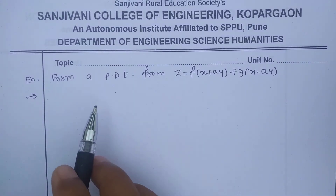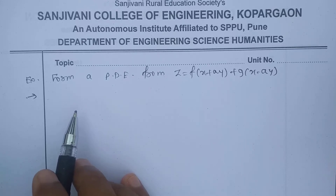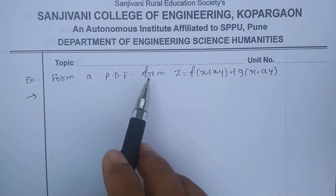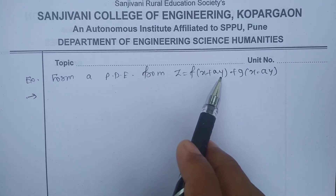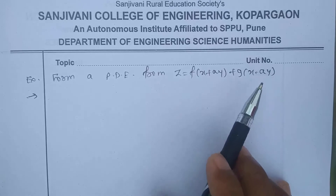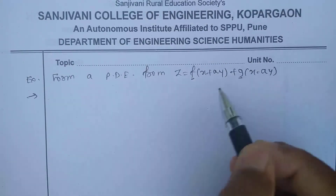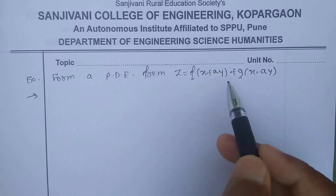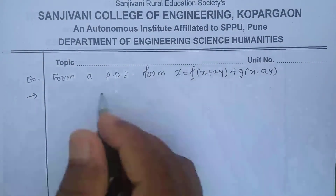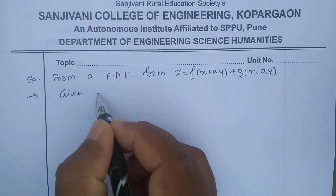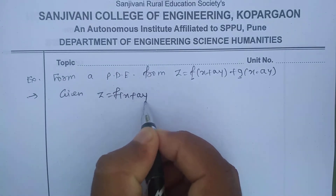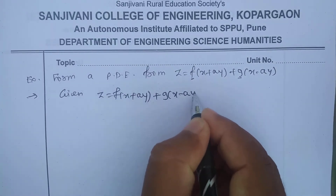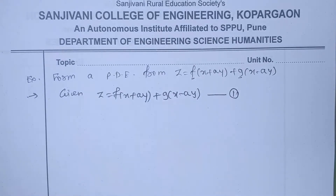Hello all, welcome to NSMS. The next example is on the formation of partial differential equations. We need to form a PDE from z = f(x + ay) + g(x - ay). There are two arbitrary functions, f and g. As seen in the last video, when there are two arbitrary functions, we will get a PDE of order two or more. Given equation z = f(x + ay) + g(x - ay) — call it equation number one. Now we differentiate this.